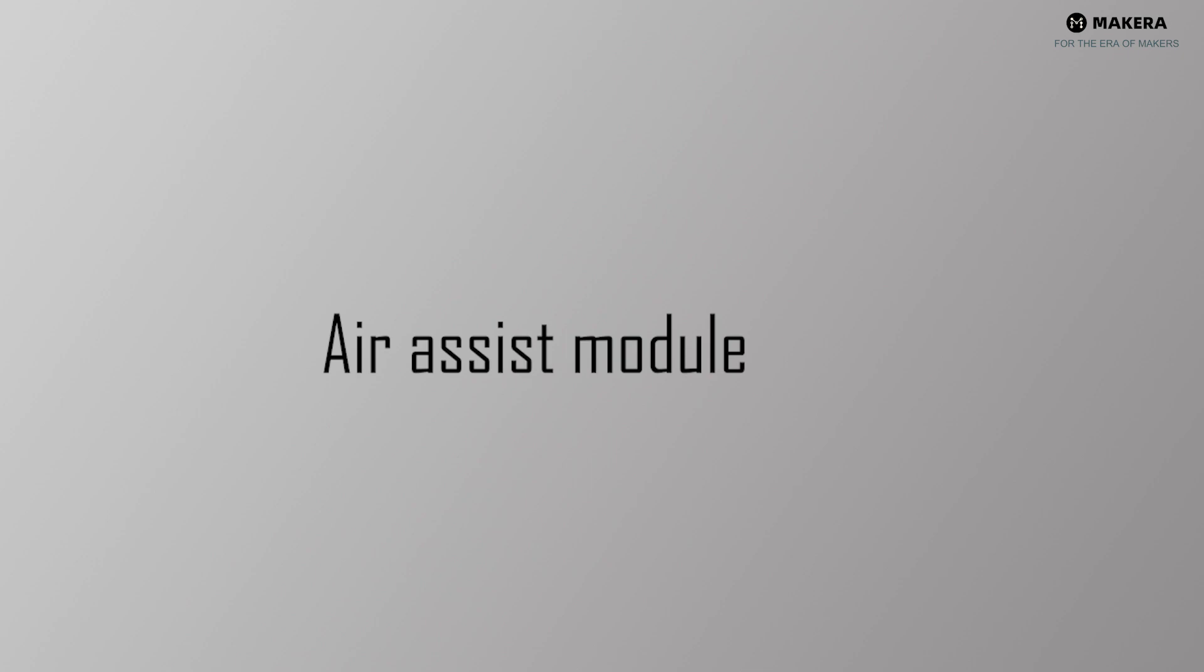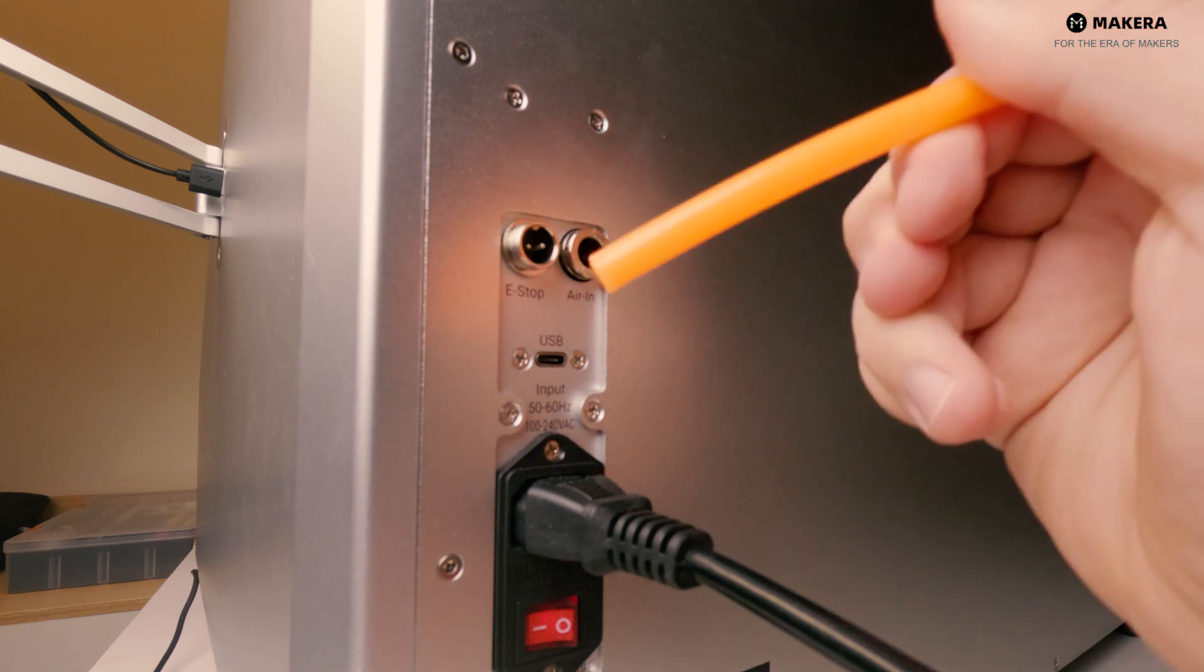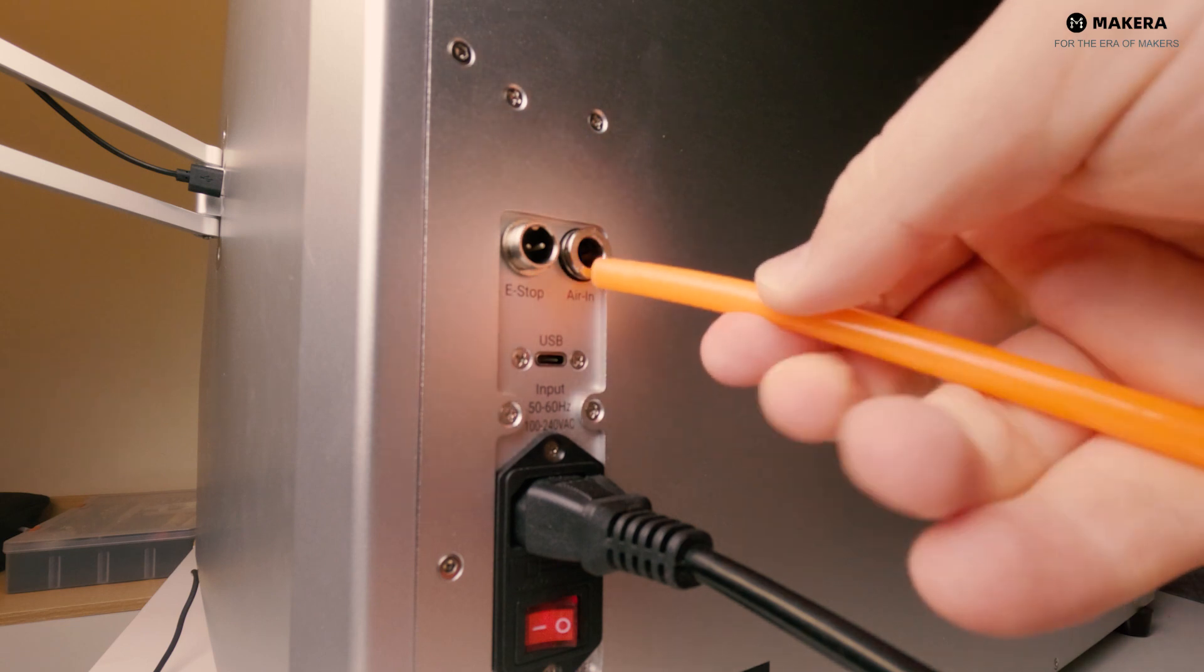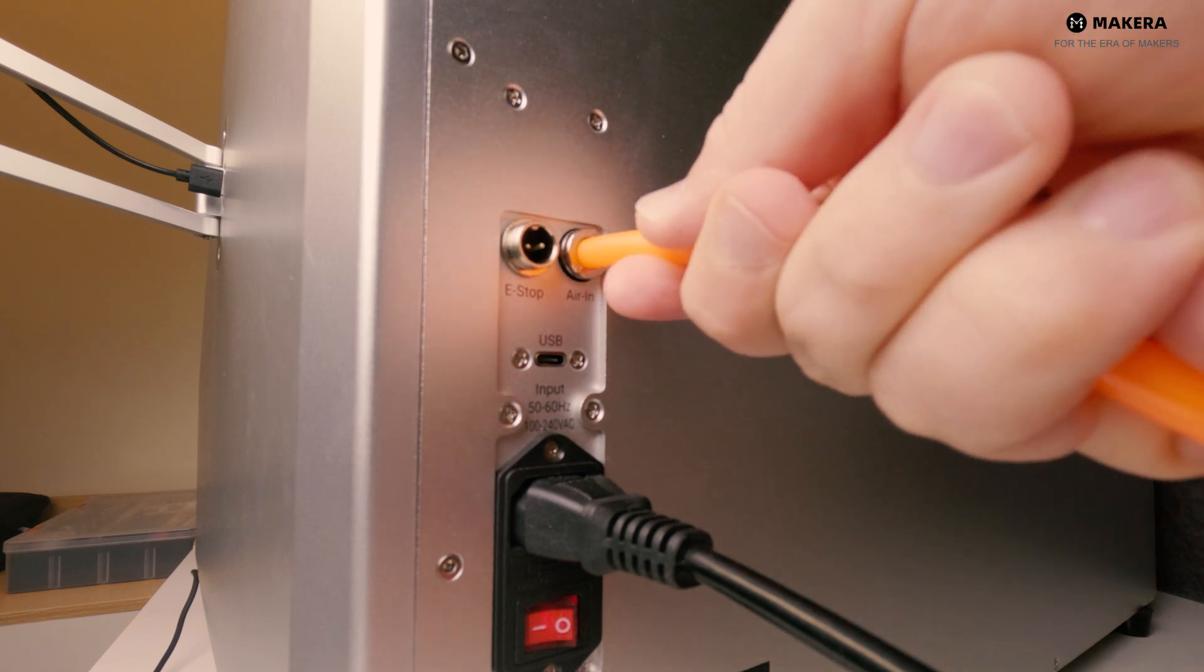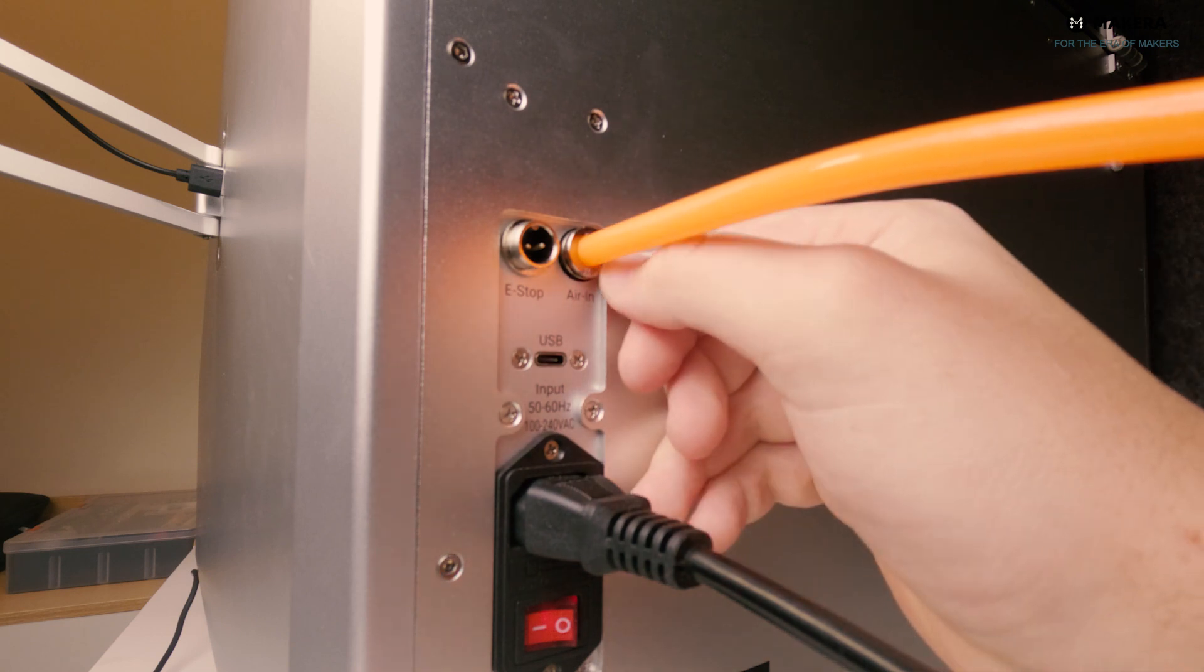Air assist module. The required pipe size is 8 mm outside diameter. I needed to cut off one end of my pipe to get a clean edge. The pipe just pushes into the air in hole and clamps automatically. To release the pipe again, press the whole clamp rim backwards and the pipe will release.